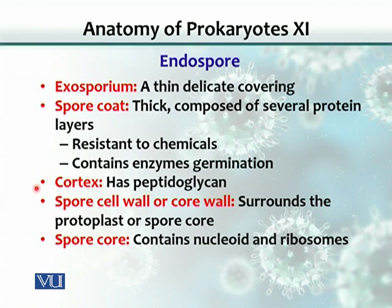The next layer is the cortex, which basically is a peptidoglycan layer equivalent to a cell wall. Then there's a spore cell wall or core wall which surrounds the protoplast or the spore core. And the core contains the nucleoid and ribosomes.